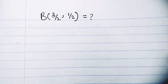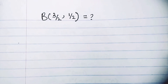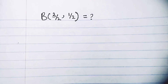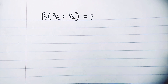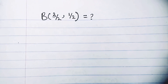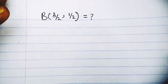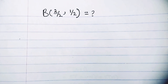Welcome to my YouTube channel. We are going to be looking at the problem in front of us: calculate — evaluate the Beta of 3/2 and 1/2. On our last video we established the relationship between the beta and gamma function, and I said that relationship will help us solve the beta of fractions. We can use the integral form but it's a very long calculation, so we'll use the beta-gamma relationship instead.